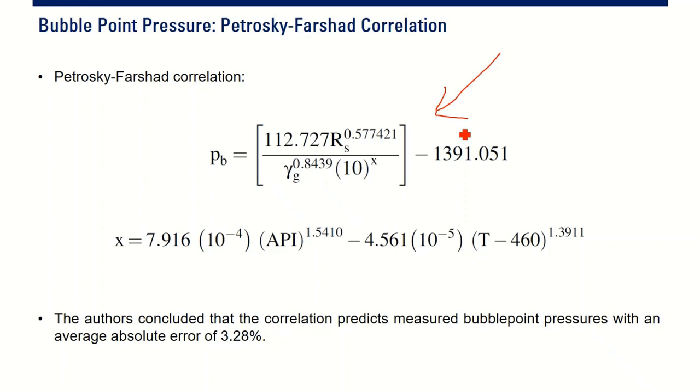And the authors concluded that the correlation predicts measured bubble point pressure with an absolute error of 3.28%, which is good.